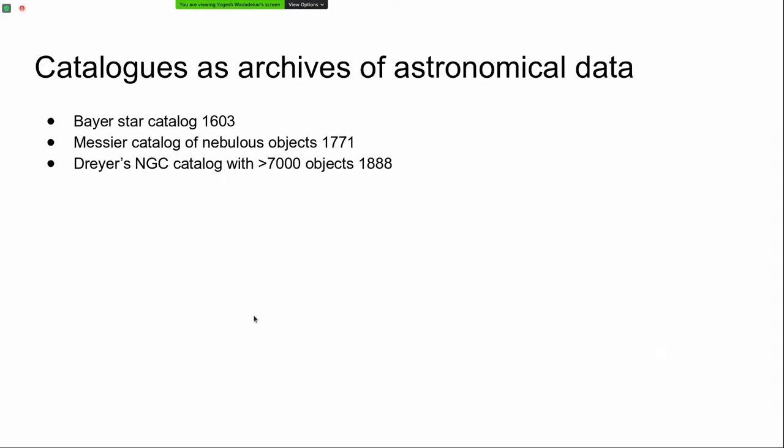Archives have an old history. In the early years they took the form of catalogs of various objects. In 1603 Bayer published his catalogue of stars — we still use some Bayer designations today. In 1771 in France, Charles Messier compiled a catalogue of nebulous objects likely to be confused with comets by comet hunters. Those of you who are amateur astronomers are surely familiar with the Messier catalogue, which is more than 200 years old. By the 1800s the study of galaxies had taken off, and Dreyer compiled the New General Catalogue, NGC, in 1888 with more than 7000 objects.